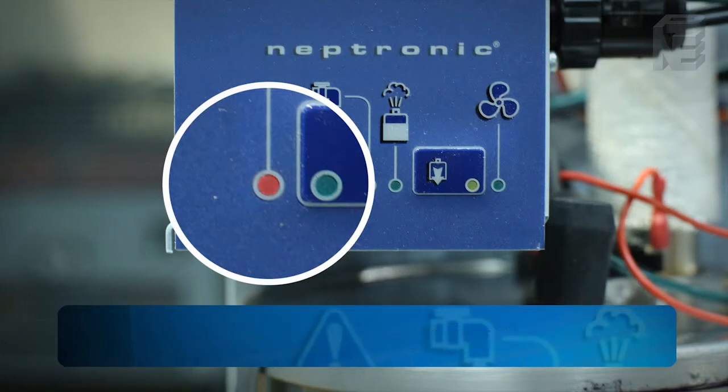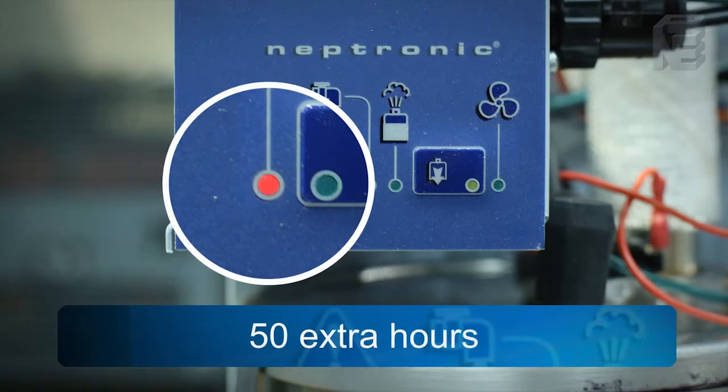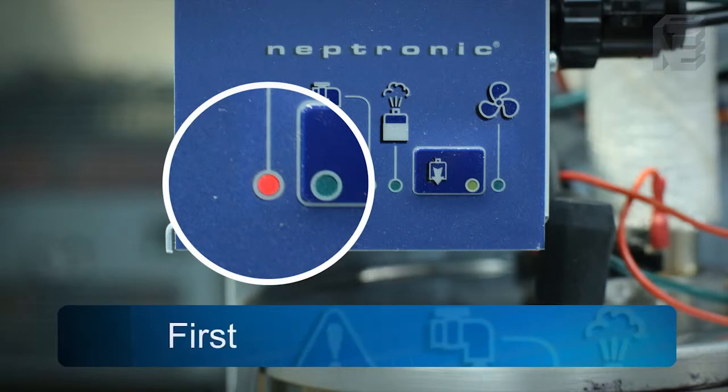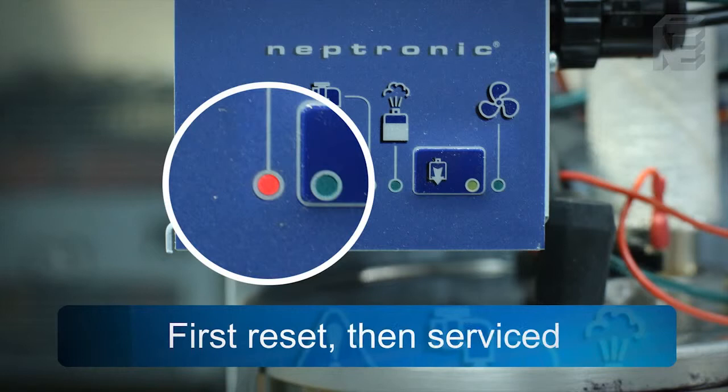The humidifier will operate for 50 extra hours with the red LED blinking continually. After the 50 hours have elapsed, the unit will automatically shut down and lock out, and the red LED will remain fully on. The humidifier must be first reset, then serviced.